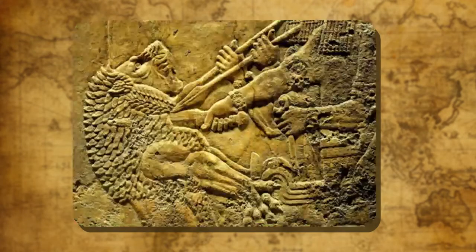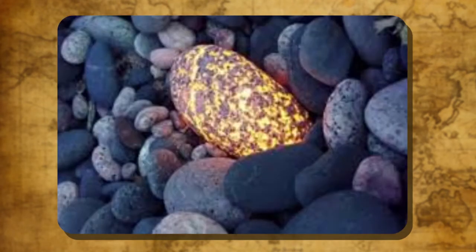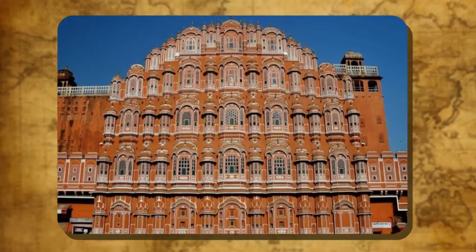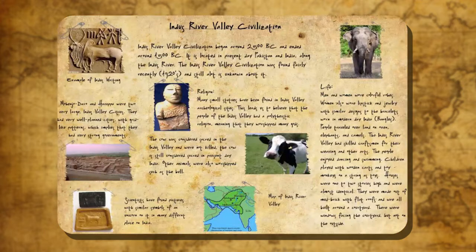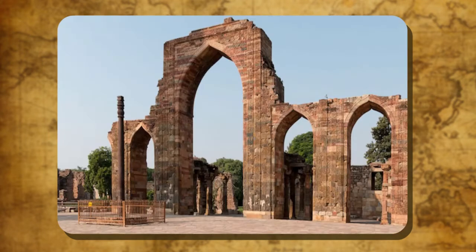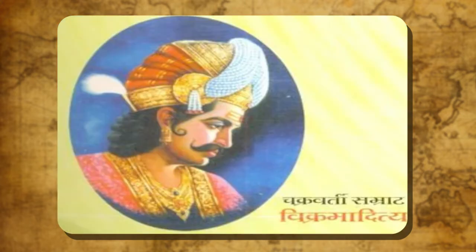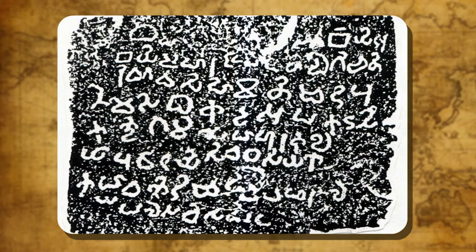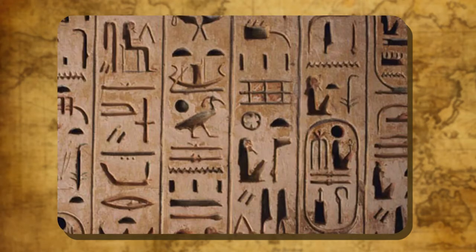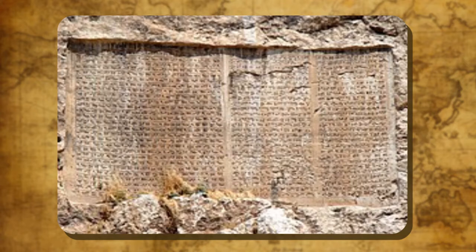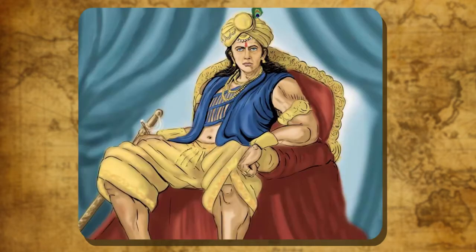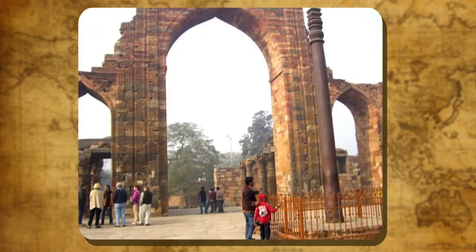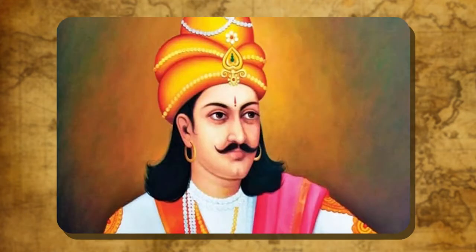Inscriptions: the written records engraved on pillars, rocks, cave walls, walls of forts, palaces, on clay and copper plates, etc. are known as inscriptions. The earliest inscriptions were found on the sites of the Harappan civilization. The inscriptions provide us with information about kings, administrations, kingdoms, etc. The process of reading and understanding the script used in inscriptions is known as decipherment, and the study of inscriptions is called epigraphy. The Allahabad pillar inscriptions present a feature of the character and conquests of King Samudragupta. The iron pillar inscriptions at Mehrauli in Delhi give us information about Chandragupta and Vikramaditya.